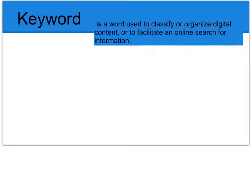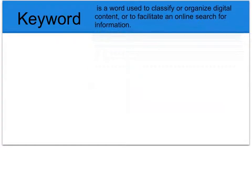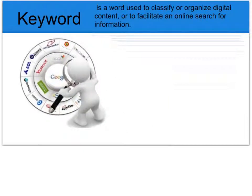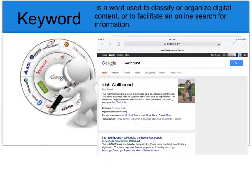A keyword is a word that is used to classify or organize digital content or to facilitate an online search for information. Keywords are used with search engines — it's a word or phrase that the user specifies to search for specific content on the Internet. For instance, in this search engine of Google, we use the keyword 'Wolfhound' to look up information on the Irish Wolfhound.